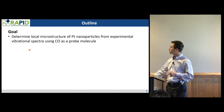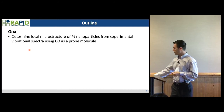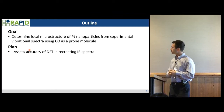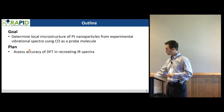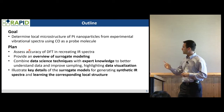The goal of work I've done thus far — and that's going to motivate my work on Blue Waters for this coming year — is to determine local microstructure, specifically platinum nanoparticles, from experimental vibrational spectra. This will be applicable to different kinds of absorbates on different kinds of materials, not just platinum. First, I'm going to assess the accuracy of DFT in recreating the IR spectra, provide an overview of surrogate modeling, combine data science techniques with expert knowledge, and highlight this using data visualization. Then I'll illustrate key details of the surrogate models before showing model results on actual experimental applications.